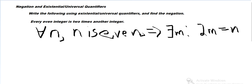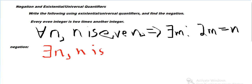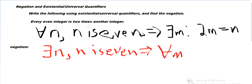And then the negation: the general rule is we change 'for all' to 'there exists' and 'there exists' to 'for all'. So there exists an integer n such that n is even, and for all m, we negate the inside — so 2m is not equal to n.